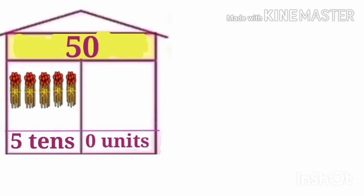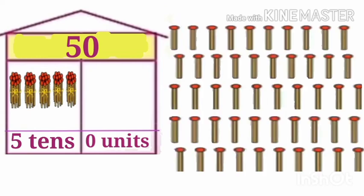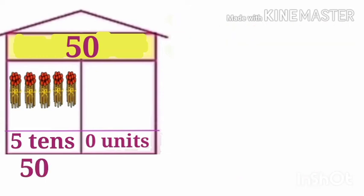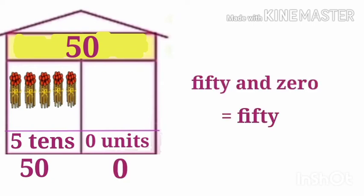In the number 50, 5 is in the tens place. When we open 5 tens bundles, we get 50 units. Therefore, in the number 50, the place value of 5 is 50. In the units place, we have 0, whose place value is also 0. So, 50 and 0 is equal to 50.